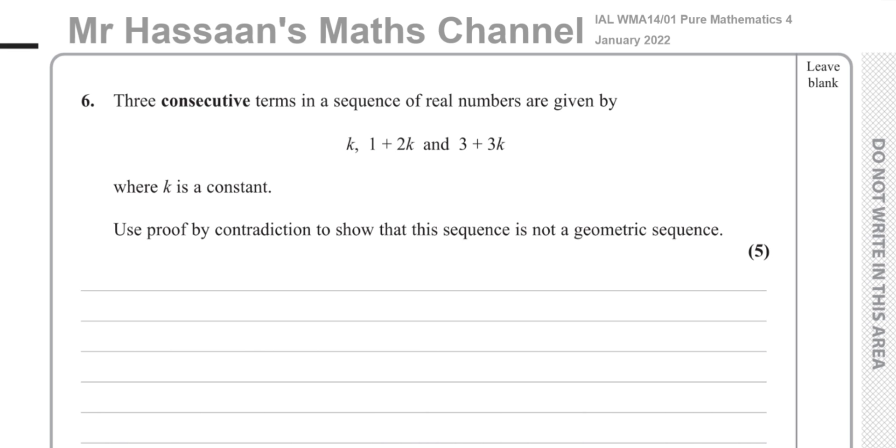It says three consecutive terms in a sequence of real numbers are given by k, 1 plus 2k, and 3 plus 3k. So three terms which are after each other in a sequence of numbers. k is a constant. We have to use proof by contradiction to show that this sequence is not a geometric sequence.